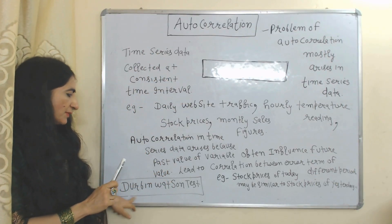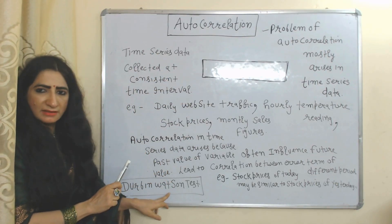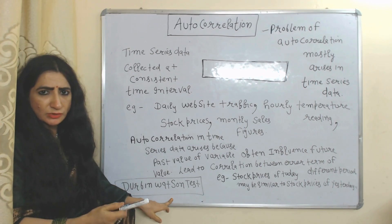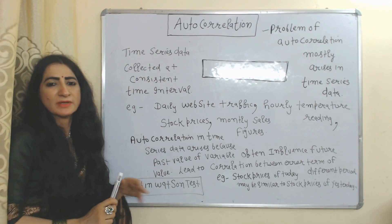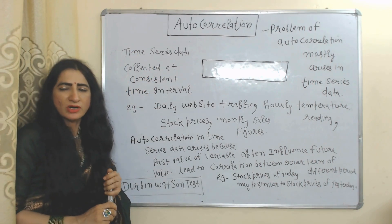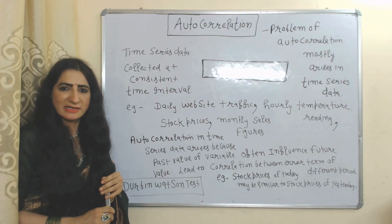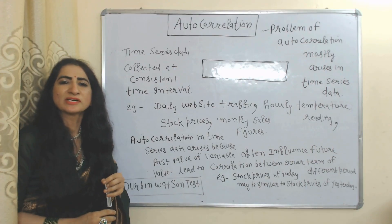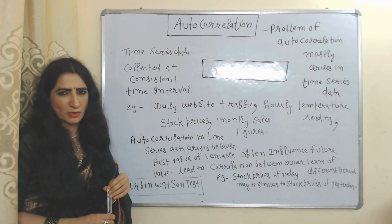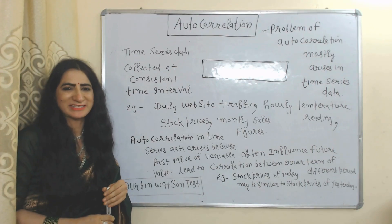The Durbin-Watson test is used to detect the autocorrelation problem. That is all for today's lecture — I hope you understood it. Thank you so much for watching this video.